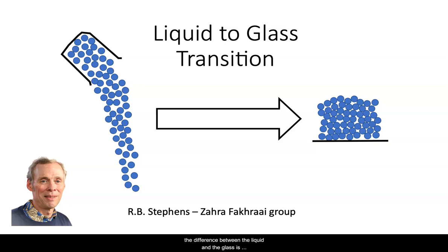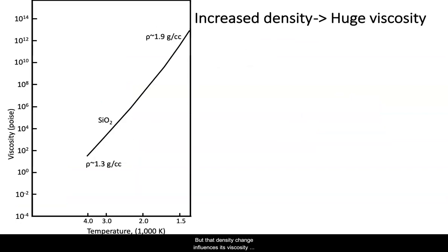Looking at the structure, the difference between the liquid and glass is remarkably subtle. One can only see that the glass is a little more dense. But that density change influences its viscosity enormously.